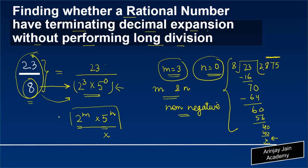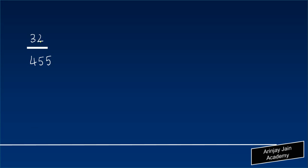Now let us look at one more example: 32 divided by 455. Now 32 can be written as 2 to the power 5. If you do a prime factorization of 455, what you will get is 5 times 7 times 13.